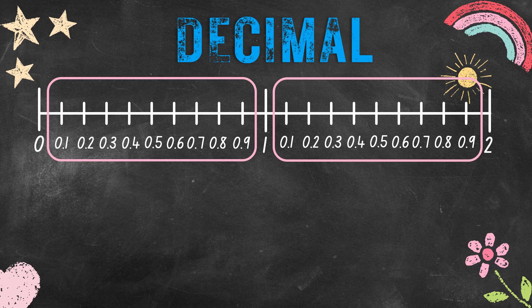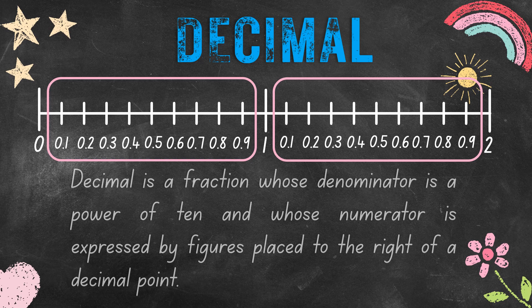So what are decimal numbers? A decimal is a fraction whose denominator is a power of 10 and whose numerator is expressed by figures placed to the right of the decimal point. Let's talk about that further in the next slides.